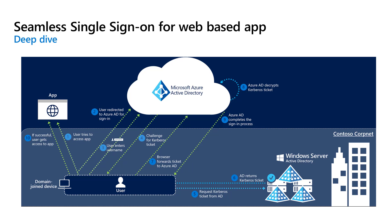Active Directory locates that computer account and returns a Kerberos ticket to the browser encrypted with the computer account's secret. The browser forwards the Kerberos ticket it acquired from Active Directory to Azure Active Directory. Azure Active Directory decrypts the Kerberos ticket, which includes the identity of the user signed into the corporate device, using the previously shared key. After evaluation, Azure Active Directory either returns a token back to the application or asks the user to perform additional proofs, such as multi-factor authentication or conditional access. If the user sign-in is successful, they're able to access that app.